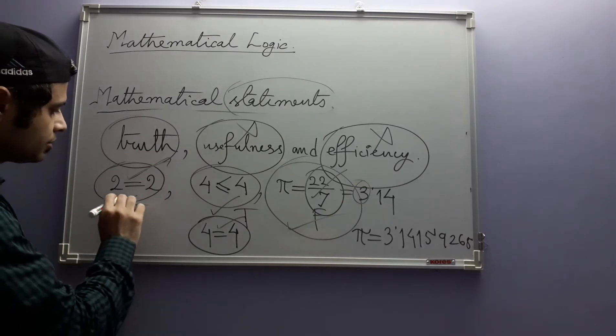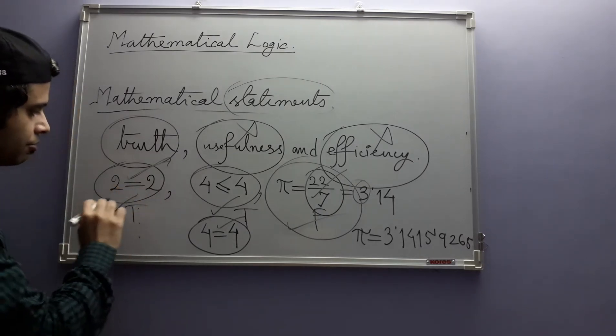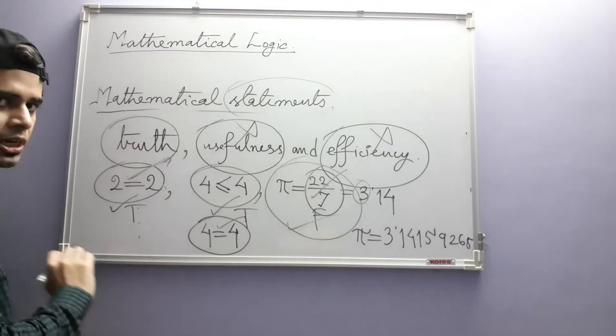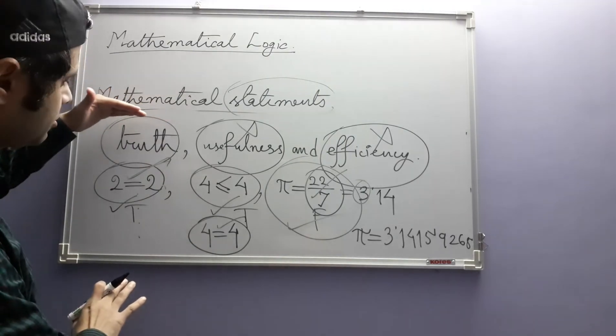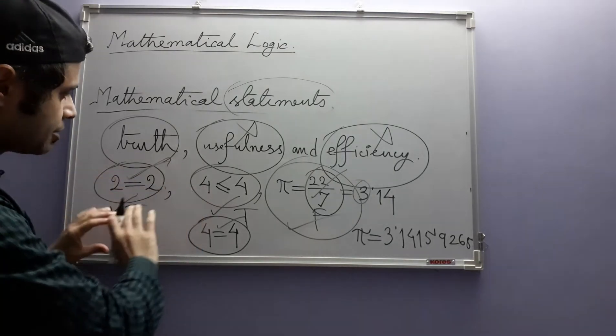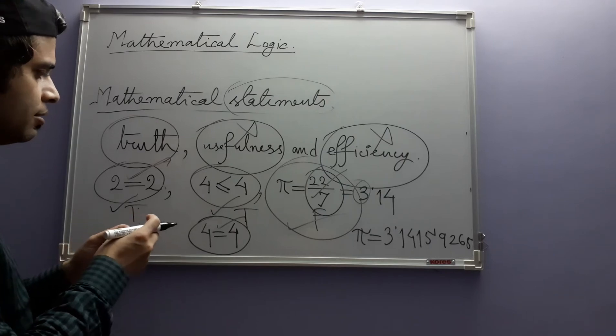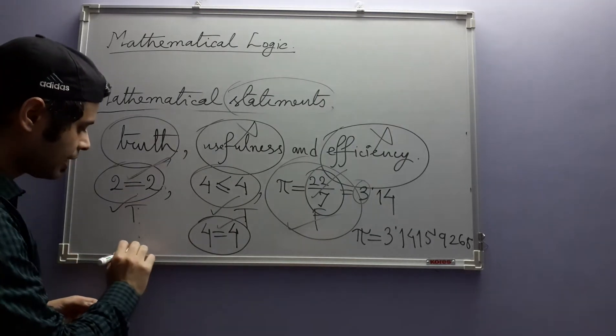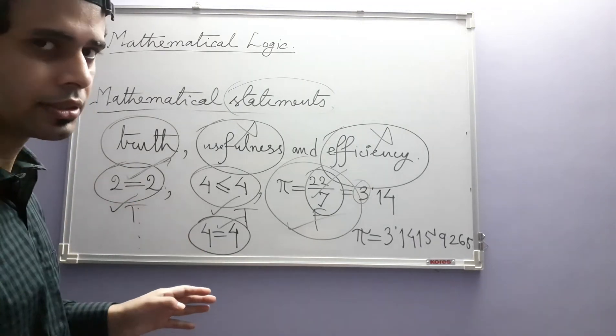But when we get some steps where we have simple statements like this which are true, the end conclusion may be something non-trivial. The steps themselves or the individual statements themselves may look like this. Something very minimal, something simple, but ultimately we will arrive at a conclusion that is not at all obvious and highly non-trivial and interesting.